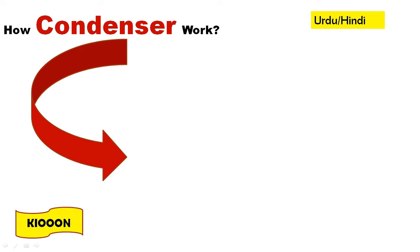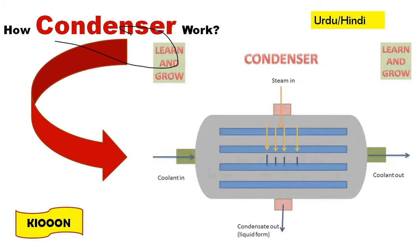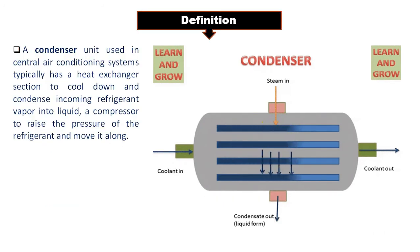Assalamu alaikum, welcome to our channel. Today our topic is how a condenser works. This is basically the diagram of a condenser, which we'll discuss in the next slide. First, we discuss its definition. A condenser is a unit used in central air conditioning